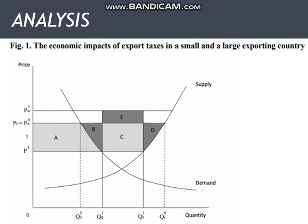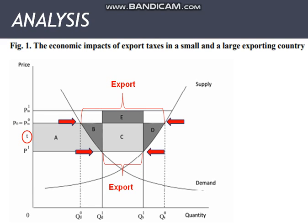The author uses a graph showing the economic impacts of export taxes in a small and large exporting country. In this graph, we can see the changes in supply and demand with and without the intervention of export taxes. As shown in the graph, the initial domestic price equals world price. At the given price, the difference between domestic supply and domestic demand is exported. When exports are taxed, represented by T, the domestic price falls to P1 with the world price remaining at P0. At that price, domestic supply falls while domestic demand increases. As a consequence, less is exported from the small country.